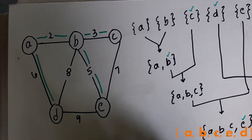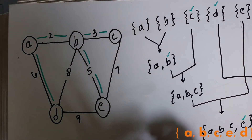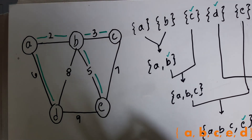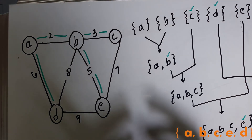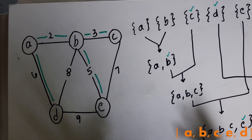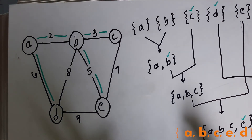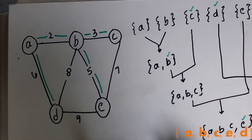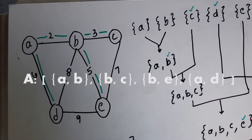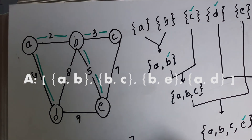We loop to the next element: C and E belong to the same set, so we discard that edge. B and D also belong to the same set, so we discard that too. Finally, D and E are also in the same set, so we discard that as well. We reach the end of the loop and the algorithm is complete — we now have all the edges belonging to the minimum spanning tree in set A.